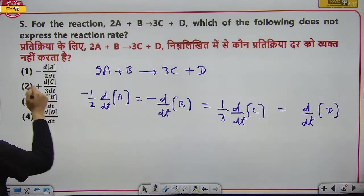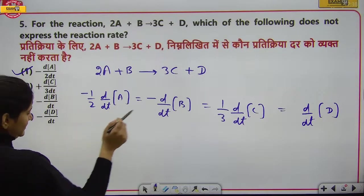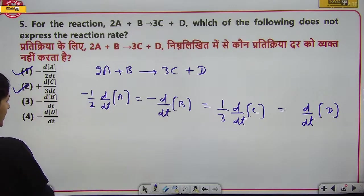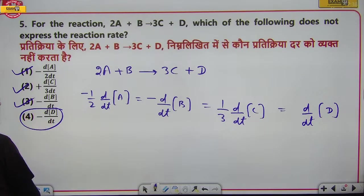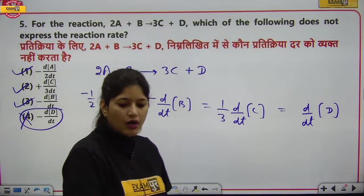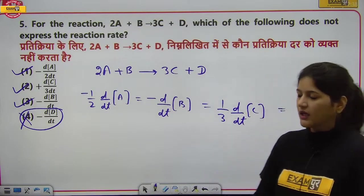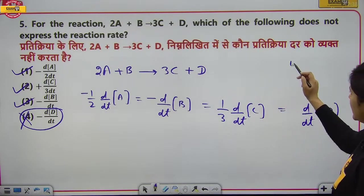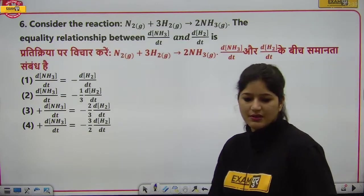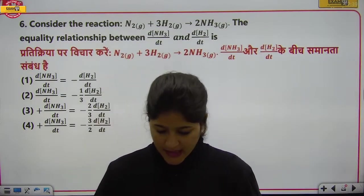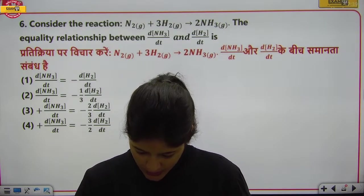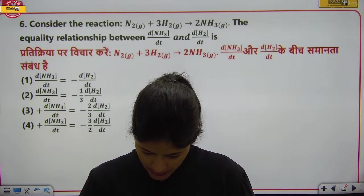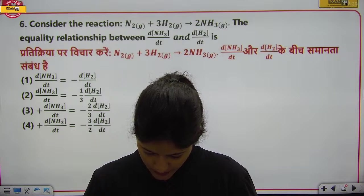−(1/2)d[A]/dt match करता है, 1/3 positive match करता है, −d[B]/dt हो सकता है। लेकिन D product है, तो उसका rate of formation positive होगा — −d[D]/dt नहीं होगा। Fourth option जो −d[D]/dt लिखता है, वो correct नहीं है। Answer fourth option है।